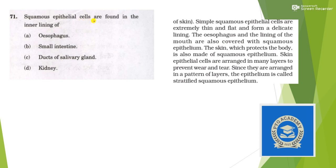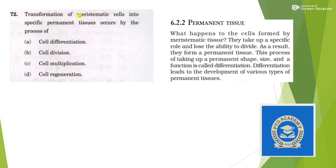Next: squamous epithelial cells are found in the inner lining of — again a repeated question — it is the oesophagus. Next: transformation of meristematic cells into specific permanent tissue occurs by the process of? The process of taking up a permanent shape, size, and function is called differentiation. Differentiation leads to development of various types of permanent tissues, so it is known as cell differentiation — option A.